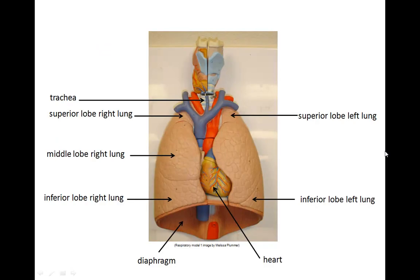Your right lung is made up of three lobes: the superior, middle, and inferior. Your left lung is made up of two: the superior and the inferior lobes. The heart lies medial, or between the lungs, and its function is to pump deoxygenated blood to the lungs to unload carbon dioxide gas, then receive the oxygenated blood returning from the lungs. The heart will then pump this oxygenated blood to your body.